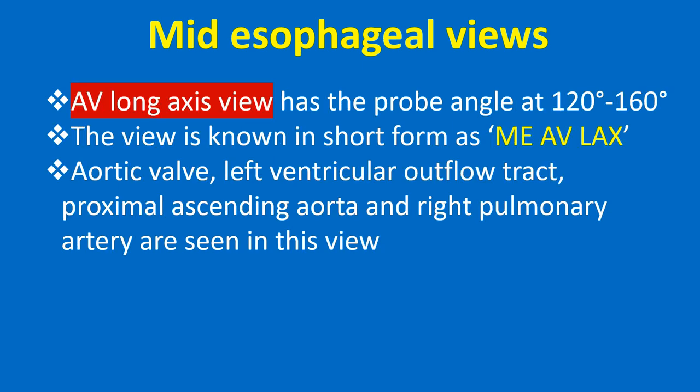The AV long axis view has the probe angle at 120-160 degrees, known in short as ME AV LAX. The aortic valve, left ventricular outflow tract, proximal ascending aorta, and right pulmonary artery are seen in this view.